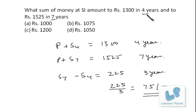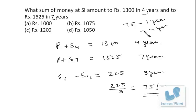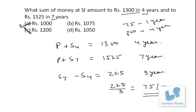75 rupees is the interest per annum, so in four years the total interest will be 300 — that is 75 times 4. Now 1300 is the amount accumulated after four years, and out of that 300 is the interest. That means the principal was 1000. The problem is very simple.